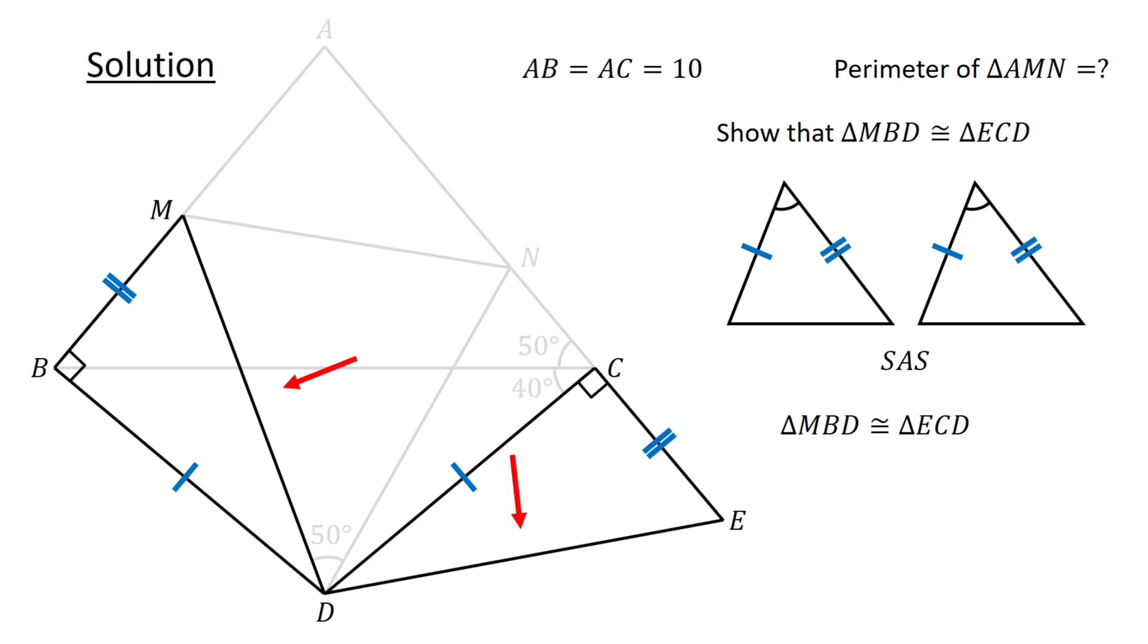Since DM and DE are corresponding sides in congruent triangles, DM equals DE. Similarly, angles MBD and ECD are corresponding angles in congruent triangles. Therefore, angle MBD equals angle ECD. Let us denote the angles as X.